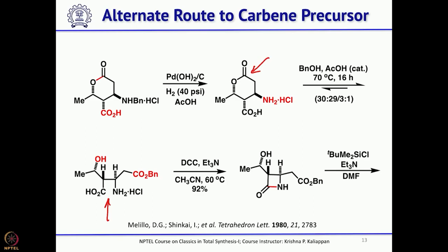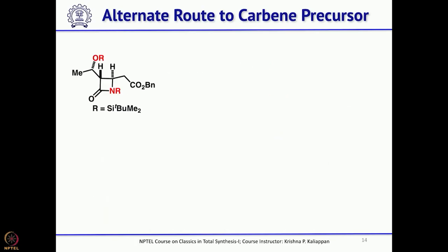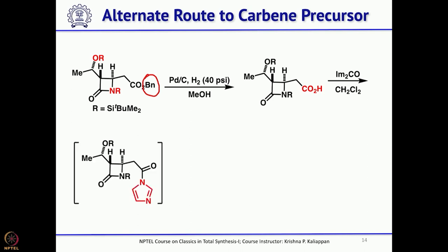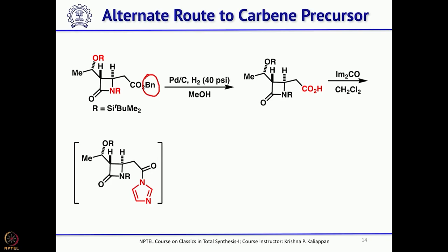Both the secondary hydroxyl group and the beta-lactam NH are protected with TBS. The benzyl ester group is then removed under hydrogenolysis conditions. Treatment with CDI (carbonyldiimidazole) gives the activated carbonate intermediate. Meldrum's acid then generates an anion that attacks the carbonate, displacing the imidazole.